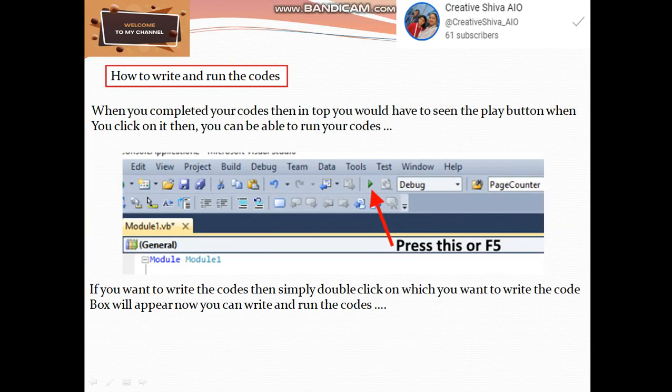How to write and run the codes? When you completed your codes then in top you would have to see the play button. When you click on it then you can be able to run your codes. There is a shortcut key to run the codes which is F5. If you want to write the codes then simply double click on which you want to write the codes. For example, I wanted to write the code for button.